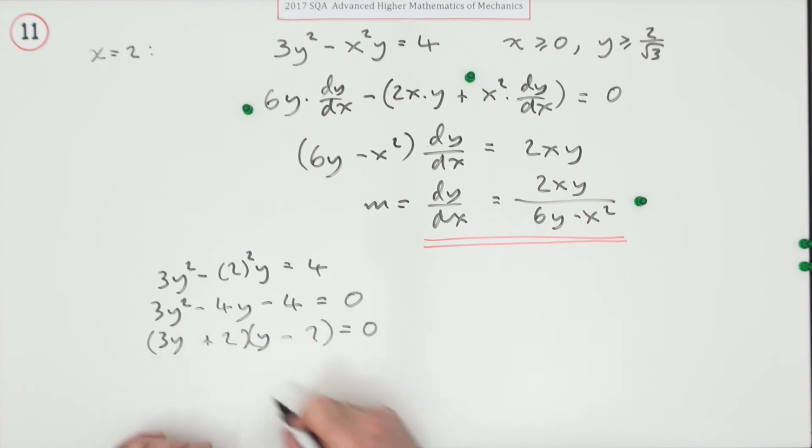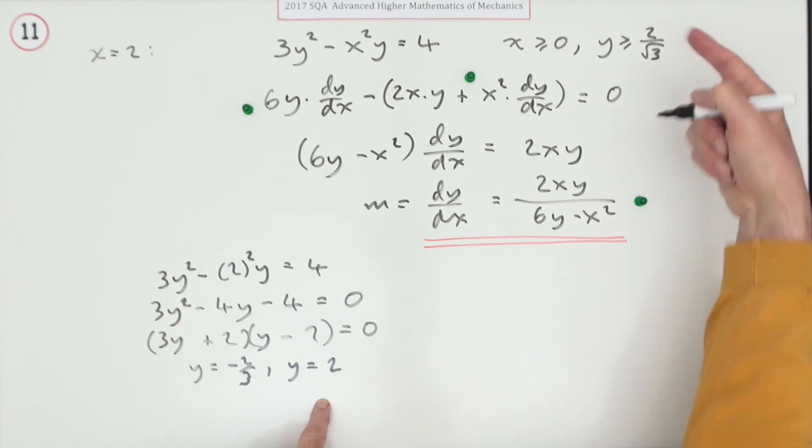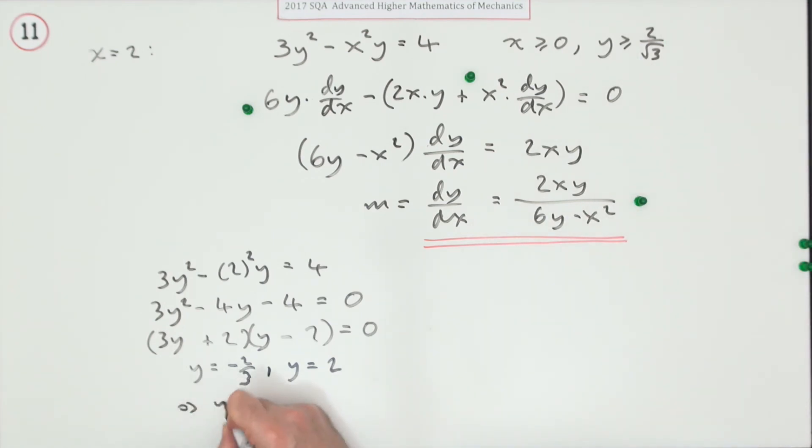This gives y = -2/3 or y = 2. However, the constraint says y must be greater than a positive value, so y = 2. The reason is that y ≥ 2/√3.